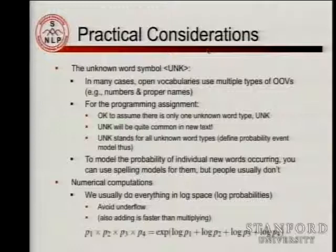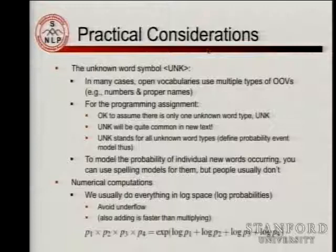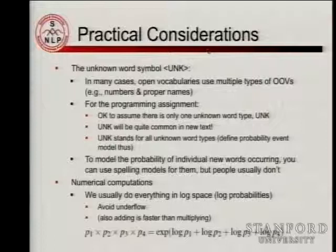In many cases, people don't actually have only one UNK — they end up with several: one for unknown numbers, one for unknown dates, and various other kinds of symbols, as well as things that are more like words. For the programming assignment, it's fine to just say we only have one UNK and work with that.